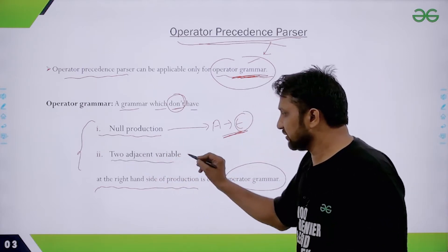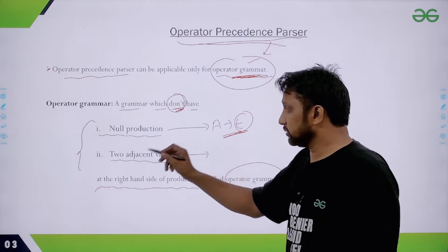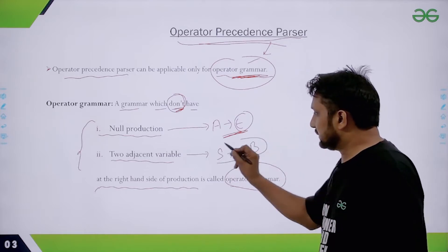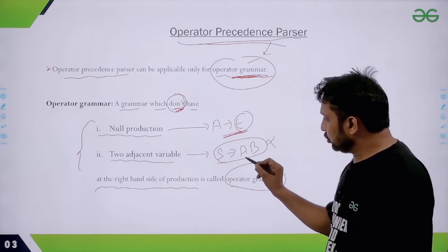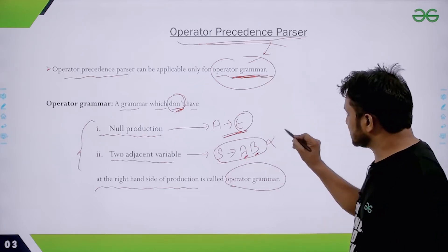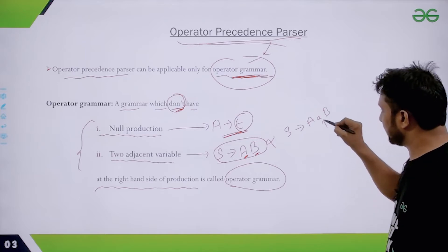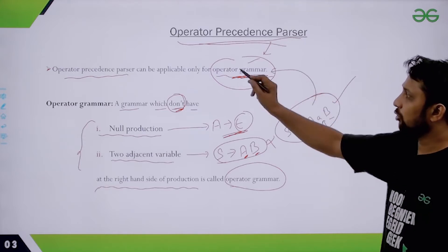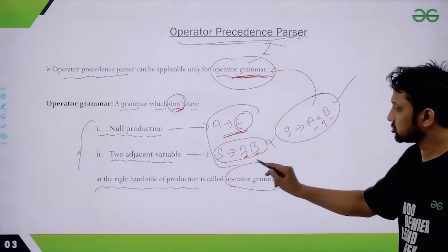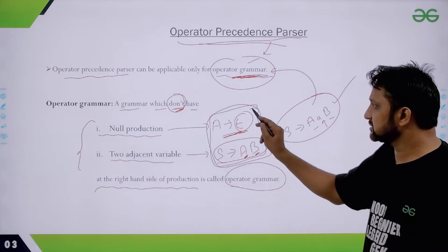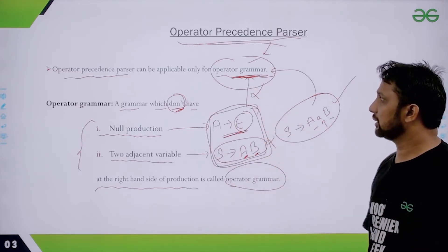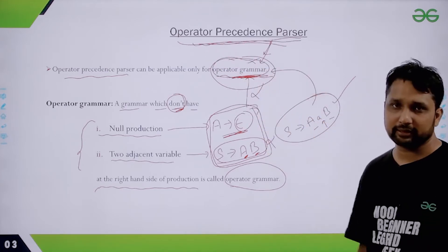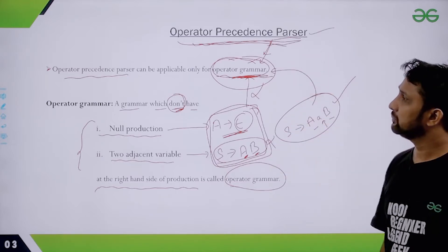The second condition is two adjacent variables. There should not be two adjacent variables. For example, if I write A tends to AB, this type of production should not be there. Two adjacent variables should not be present. However, a production like A → aB, where there is a terminal in between, is allowed in operator grammar. These two types of productions are not allowed. Any grammar having them is not an operator grammar, and that is also the limitation of the operator precedence parser.